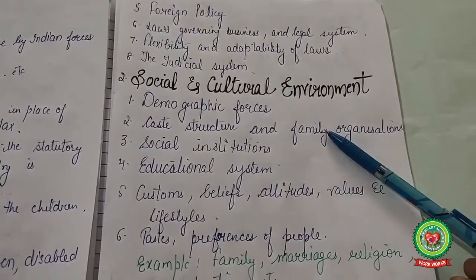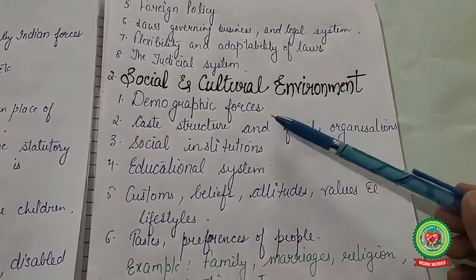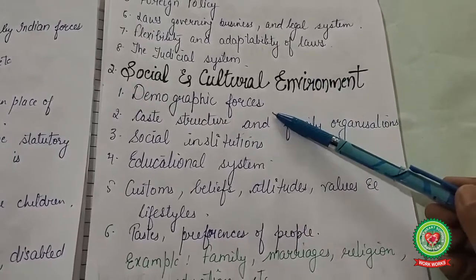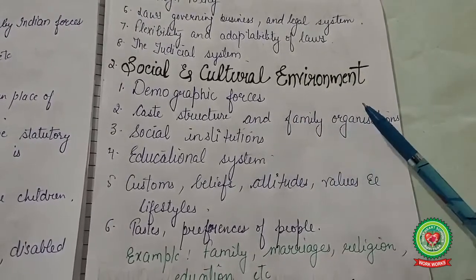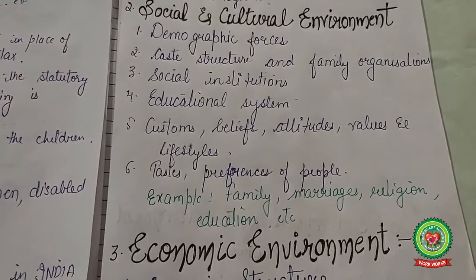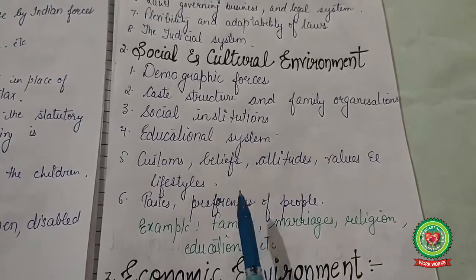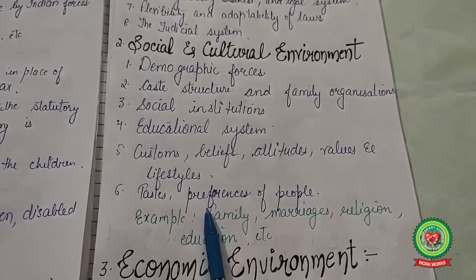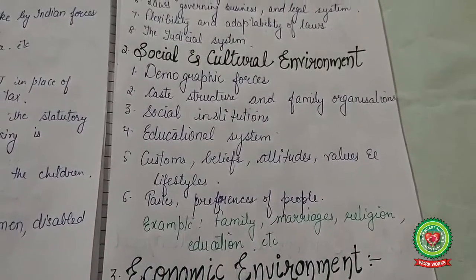Social and cultural environment refers to the characteristics of the society in which a business firm exists. It consists of demographic forces such as size, composition, mobility, and geographical dispersal of population; the caste system and family organizations (joint or nuclear family); social institutions, educational systems, customs, beliefs, attitudes, values, and lifestyles; and the tastes and preferences of people. Examples include family, marriages, religion, and education.